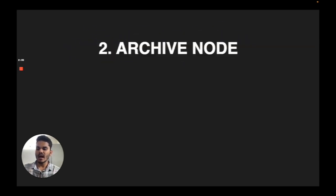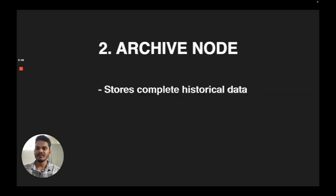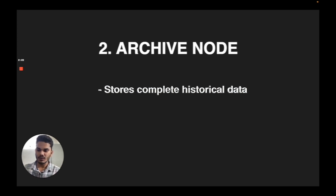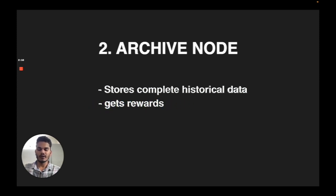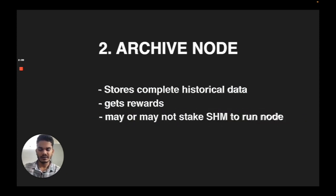The second type is archive nodes. These archive nodes store the complete blockchain data — all the historical data is stored in this node. These also get rewarded by a portion of the network rewards, and to run an archive node, you may or may not stake the SHM token.